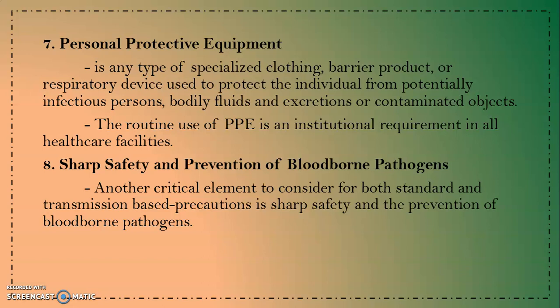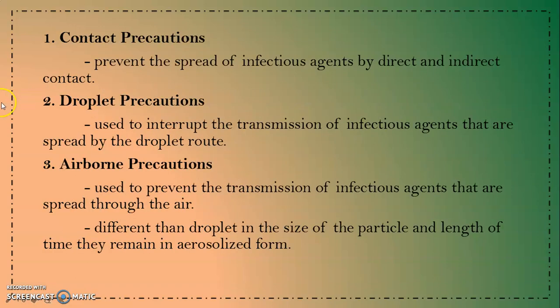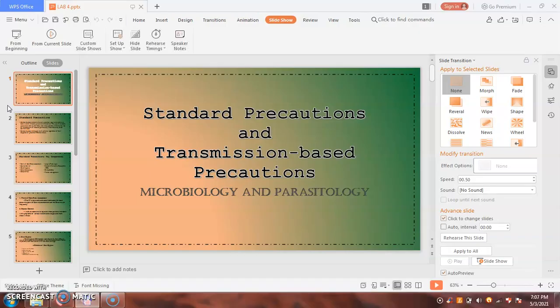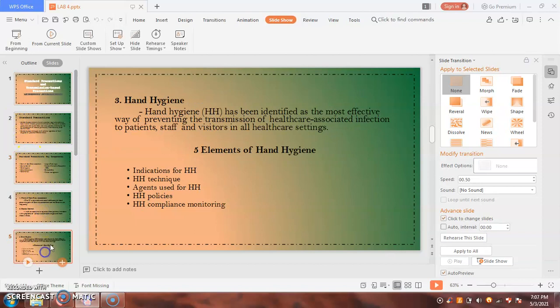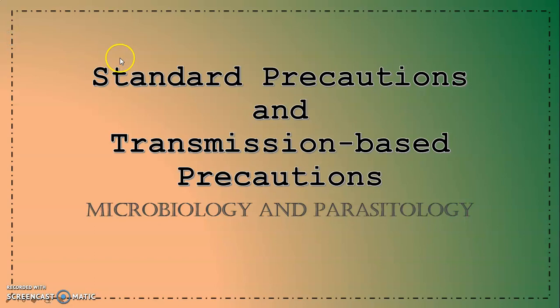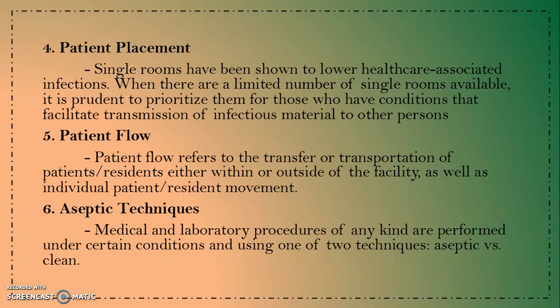It is imperative for the IP to understand the audit process: why it is important and to whom, and how and when audit results are provided. The fourth key component of standard precautions is patient placement. Single rooms have been shown to lower healthcare-associated infections. When a limited number of single rooms are available, it is prudent to prioritize them for patients with conditions that facilitate transmission of infectious materials to others.